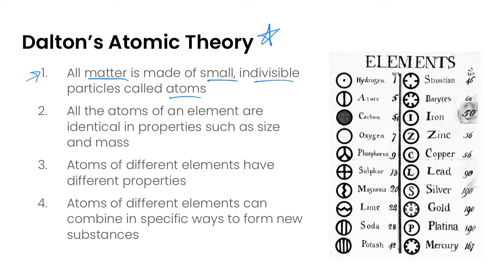All atoms of an element are identical in properties such as size and mass. Atoms of different elements have different properties, and atoms of different elements can combine in specific ways to form new substances.